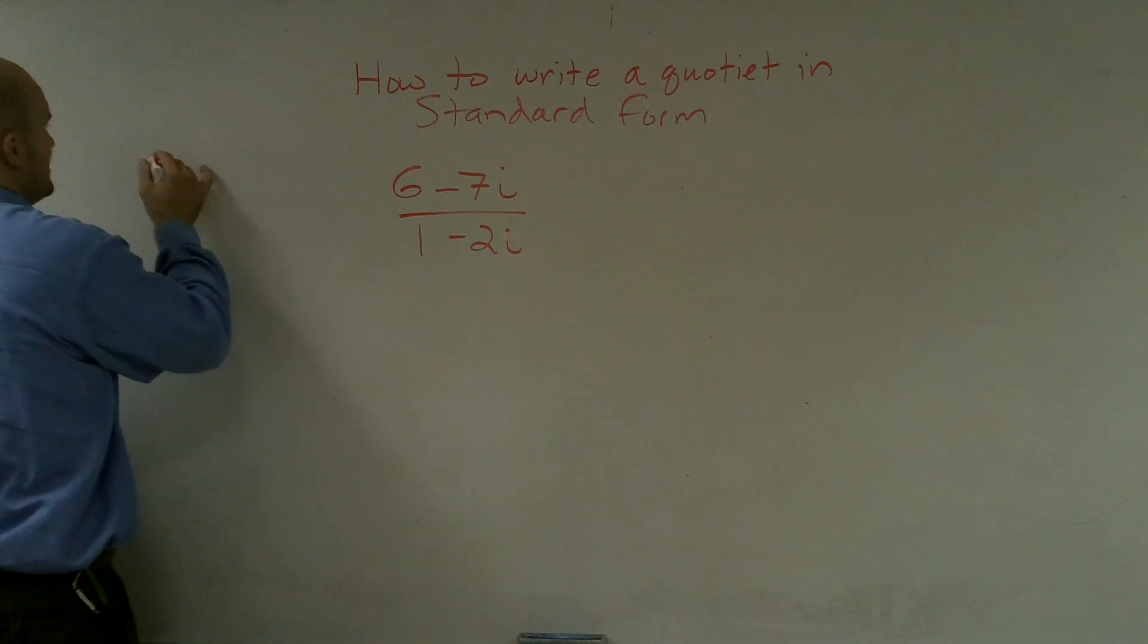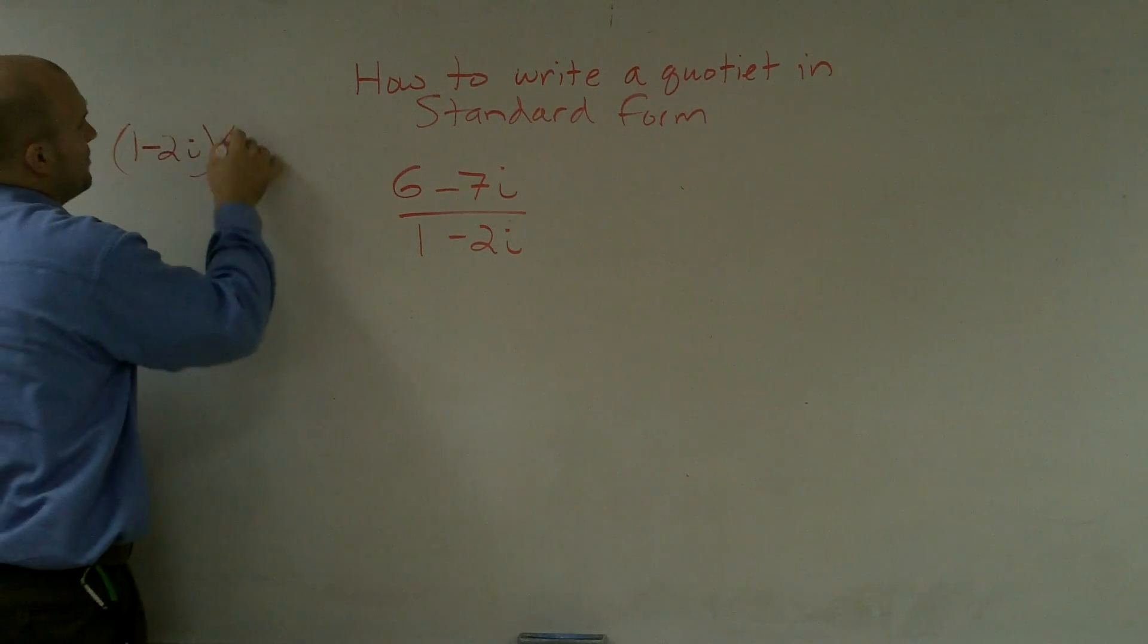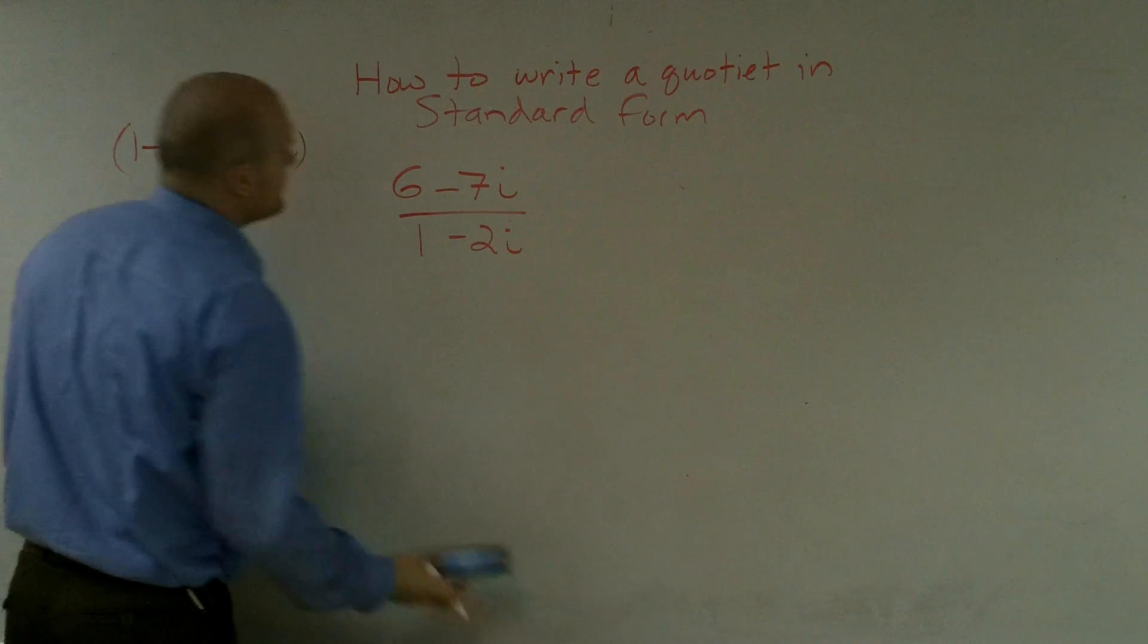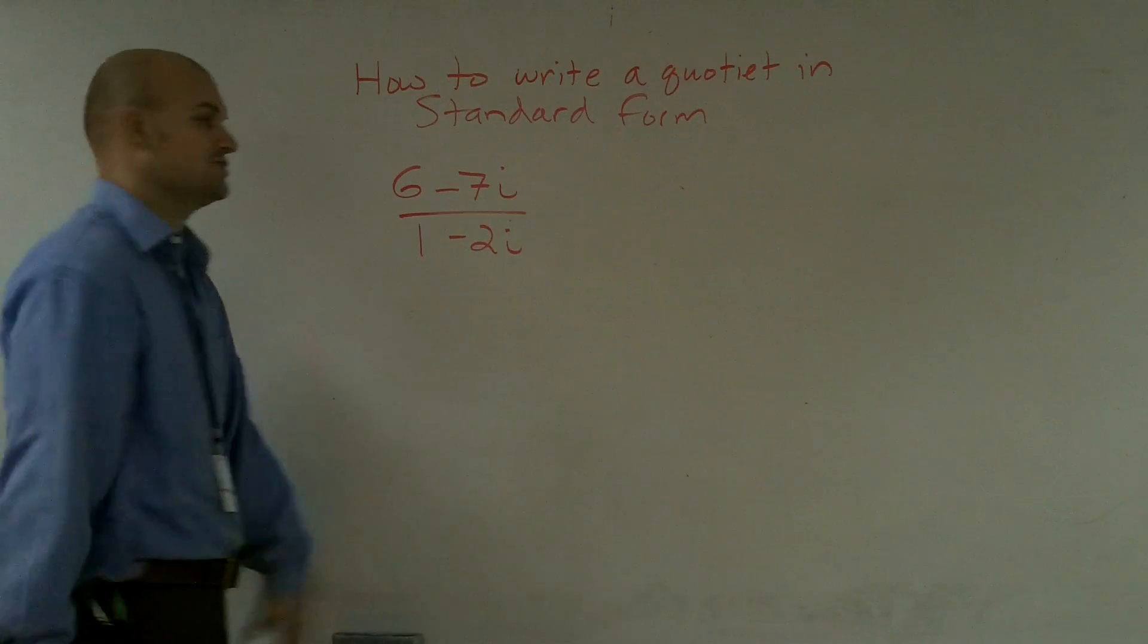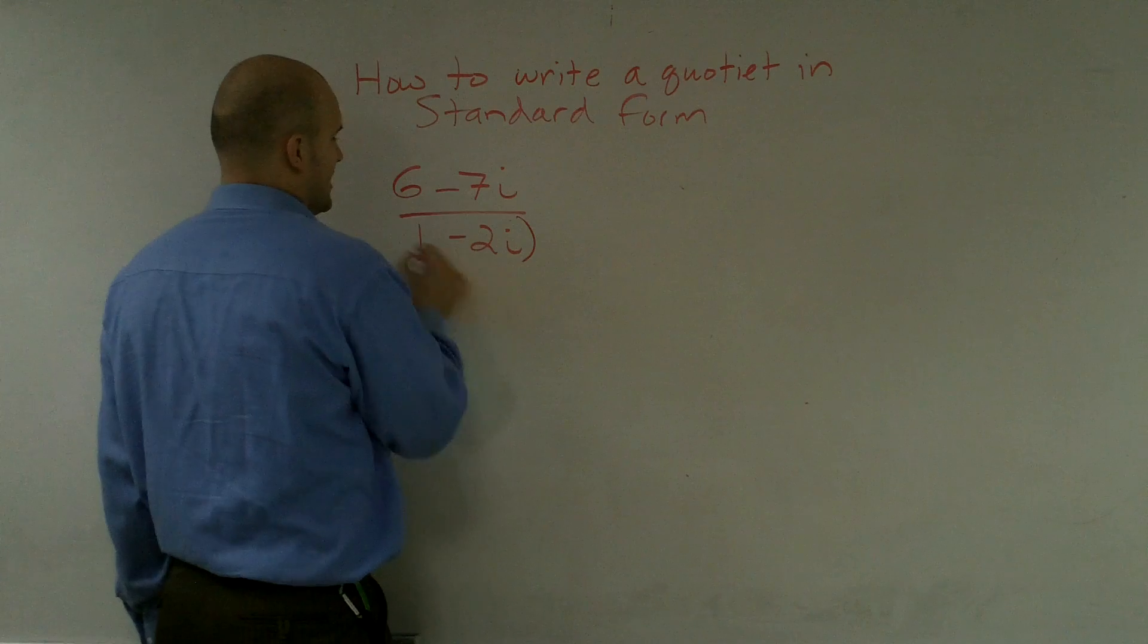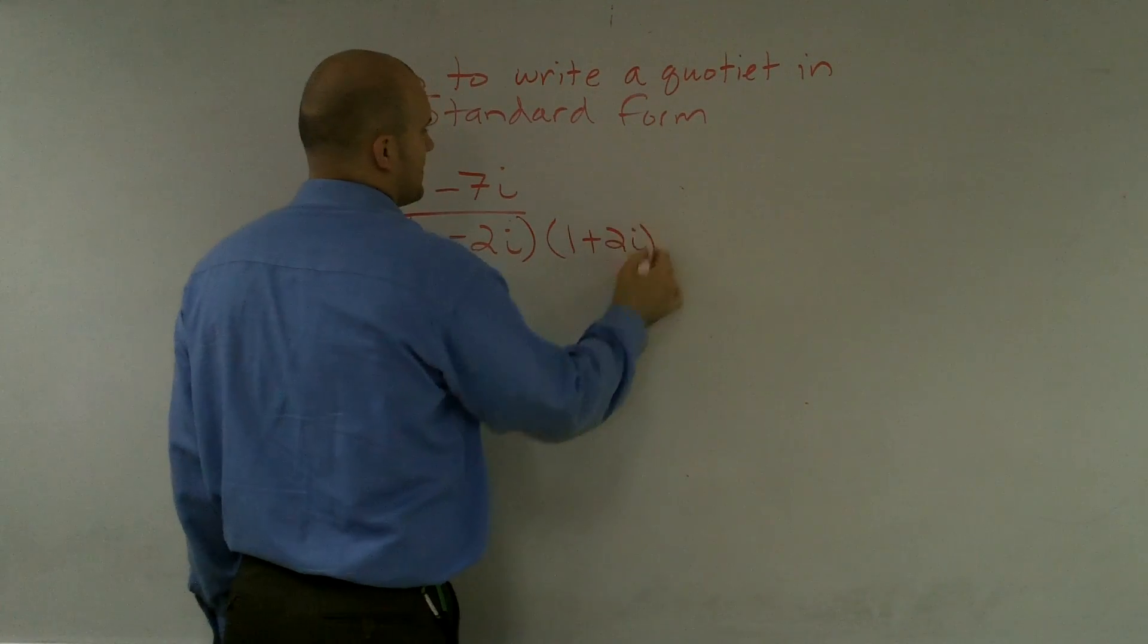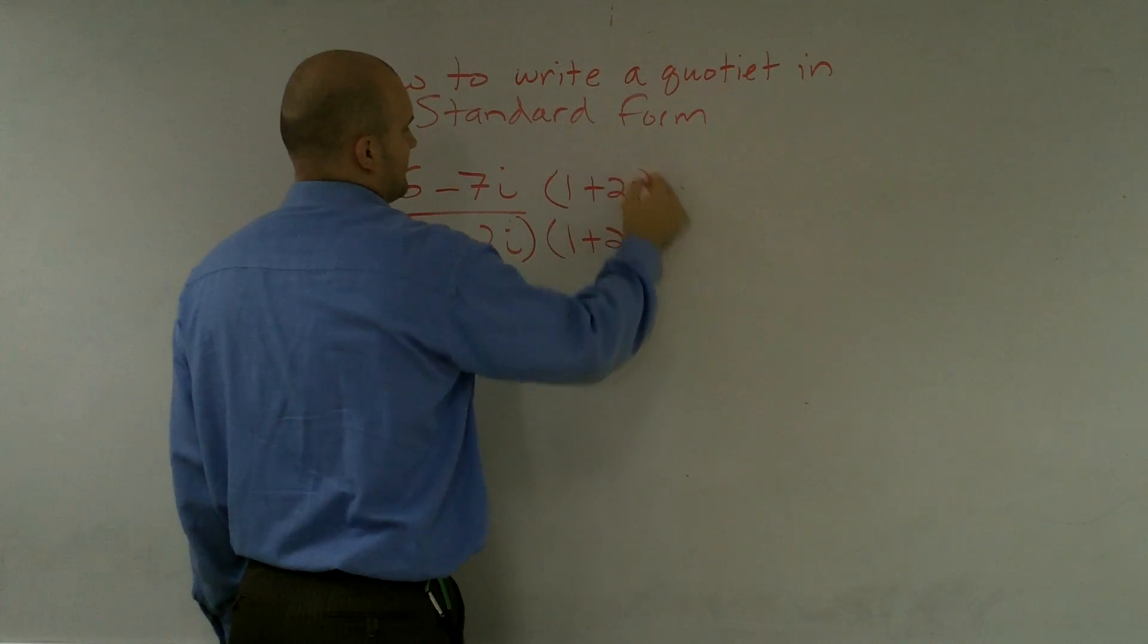And if you guys remember what the conjugate, the conjugate of 1 minus 2i is going to be 1 plus 2i. And just remember whatever you multiply on the bottom, you also have to multiply on the top because you have to keep the fraction pure. So I'm going to multiply the bottom by its conjugate, 1 plus 2i, and therefore also multiply the top by 1 plus 2i.